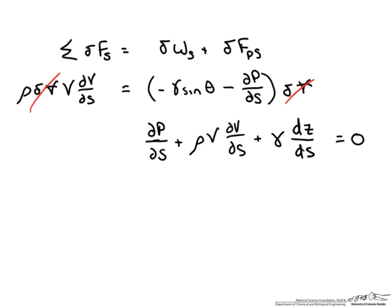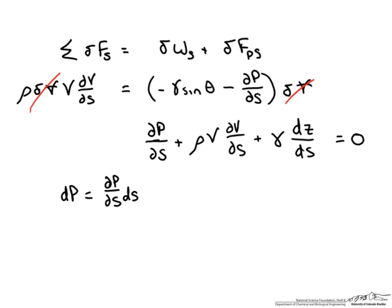The differential pressure dp is going to be a function of the differential pressure in the s direction and the differential pressure in the normal direction. However, along a streamline, dn is going to be equal to zero. Thus we can rewrite our differential pressure as just a function of s, and we go ahead and plug that back in.